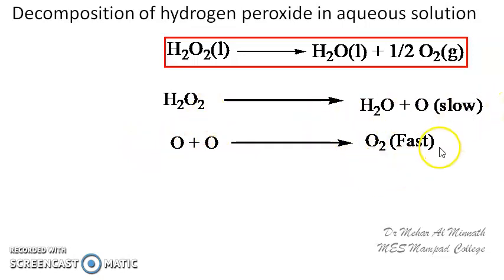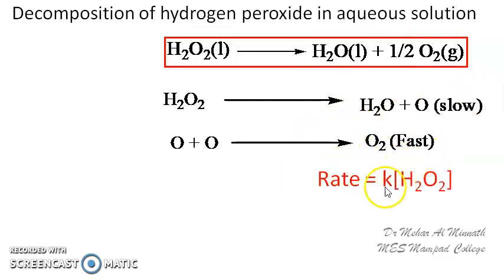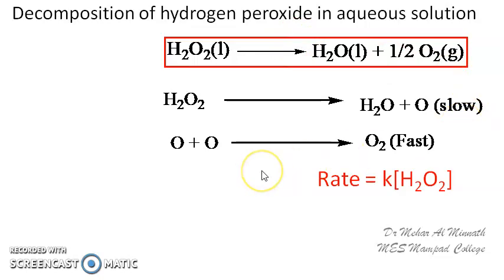The first step is the slow step and the second step is the fast step — the combination of oxygen atoms to form an oxygen molecule is fast, while the decomposition of hydrogen peroxide to water and an oxygen atom is slow. We always consider this slow step as the rate-determining step. The rate expression can be written as: rate = K × [H₂O₂]. So the rate expression shows that the reaction is a first-order reaction.